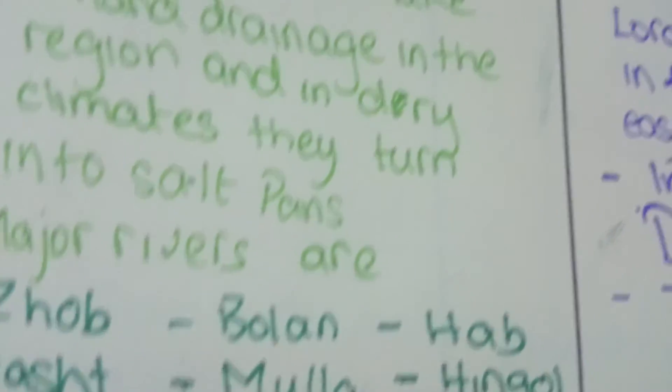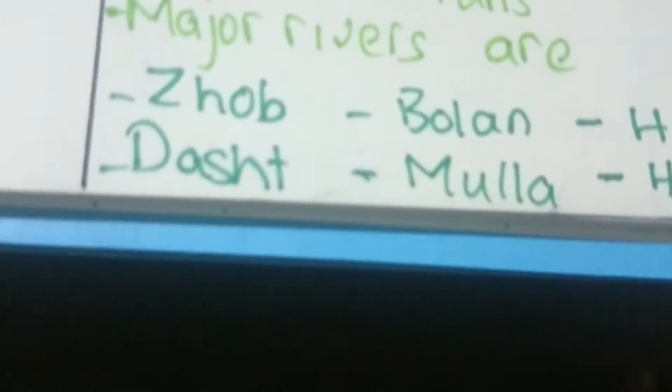These hamuns create inland drainage in the region, and in dry climates they turn into salt pans. Major rivers are Zhob, Bolan, Hab, Dasht, Mola, and Hingol.